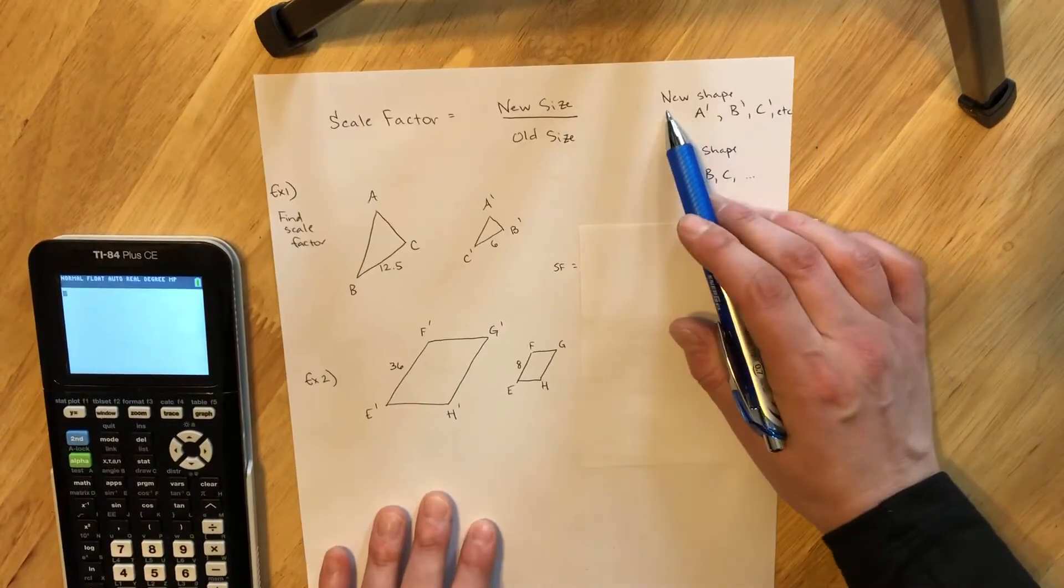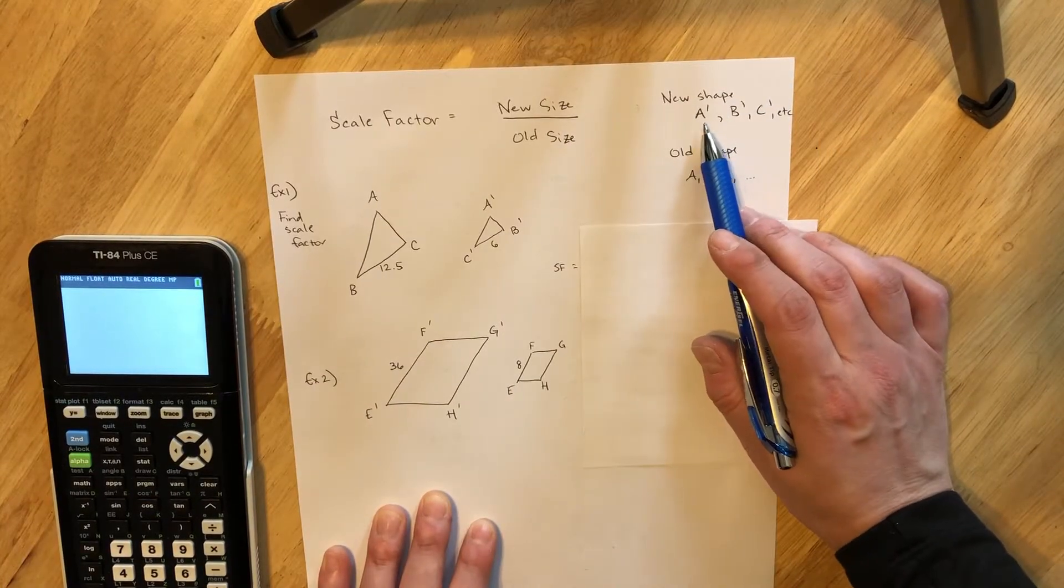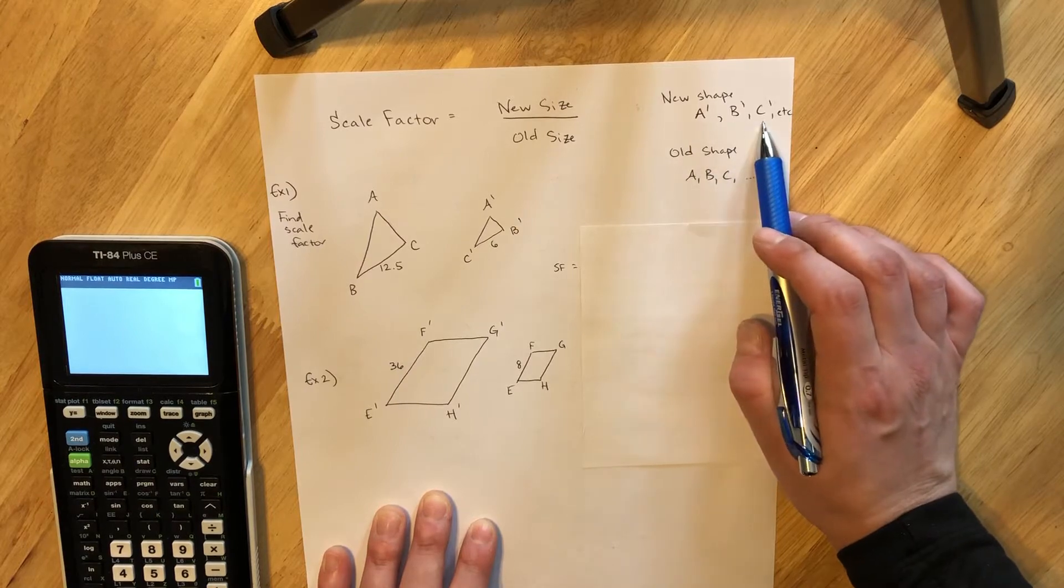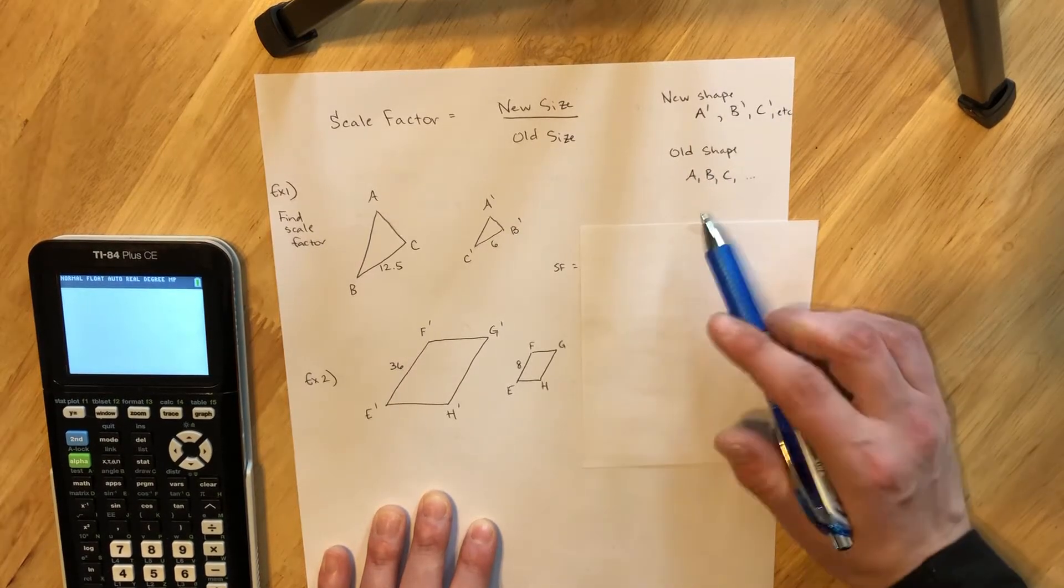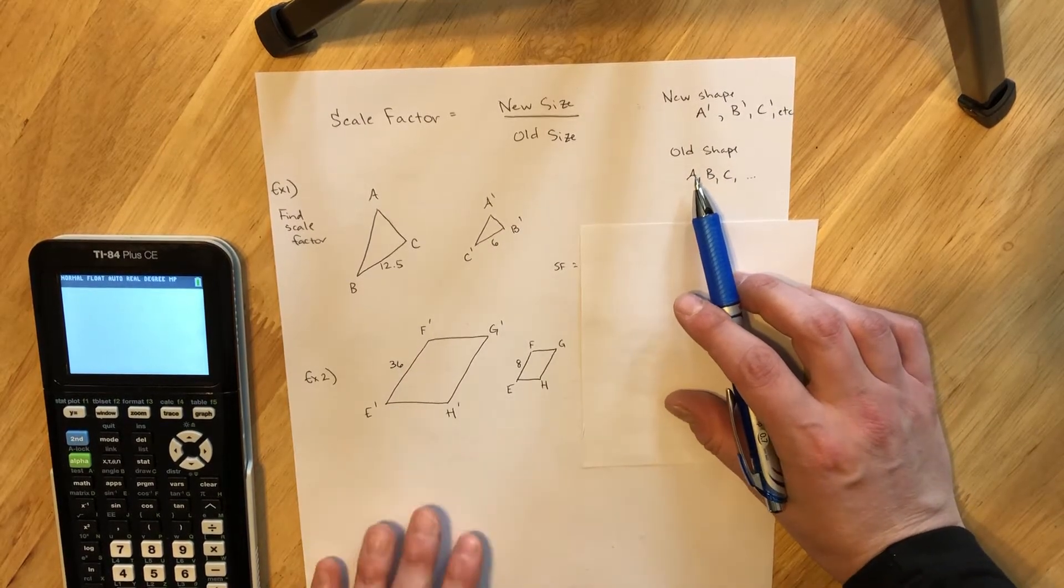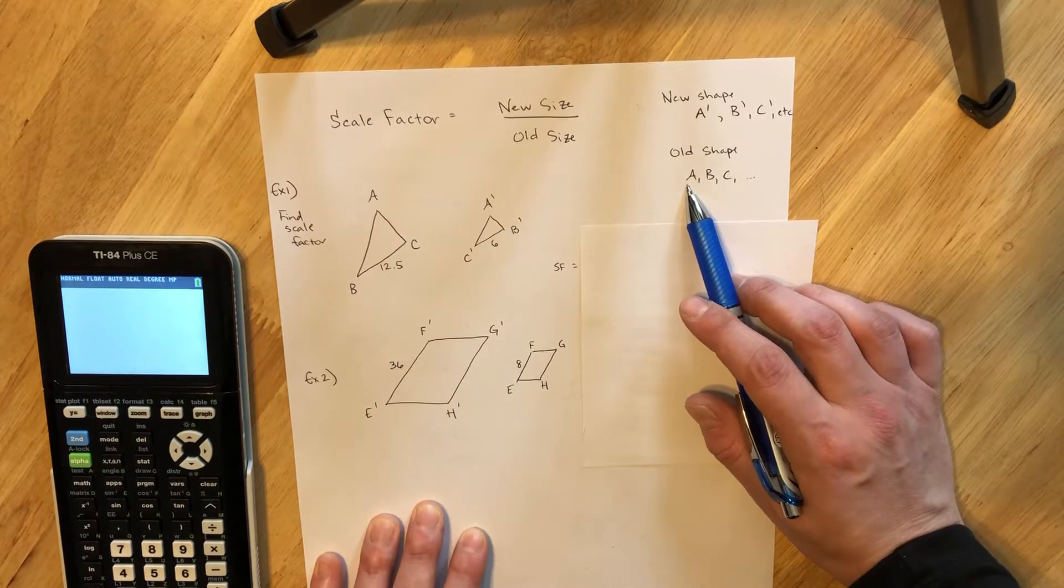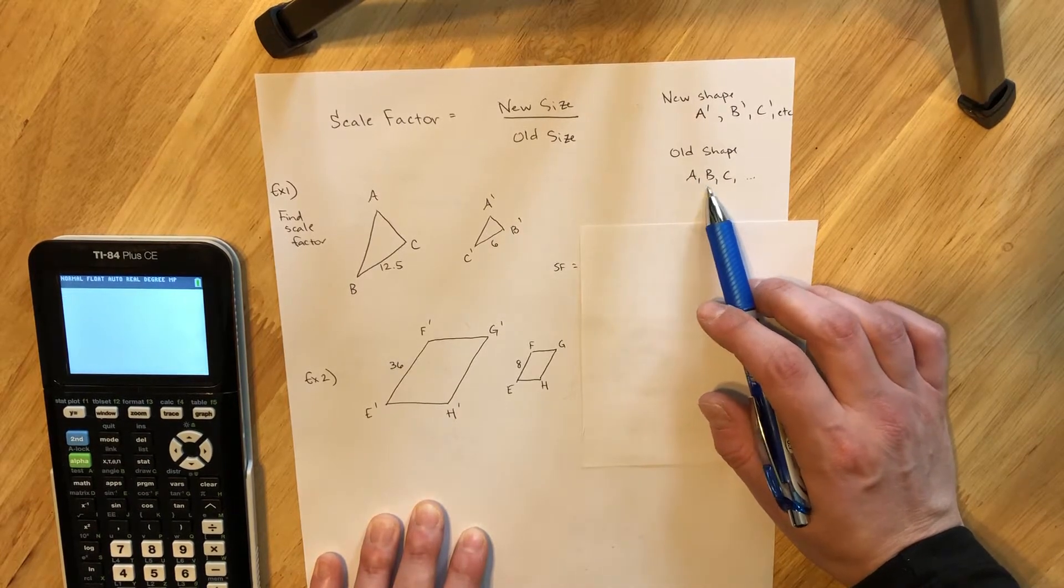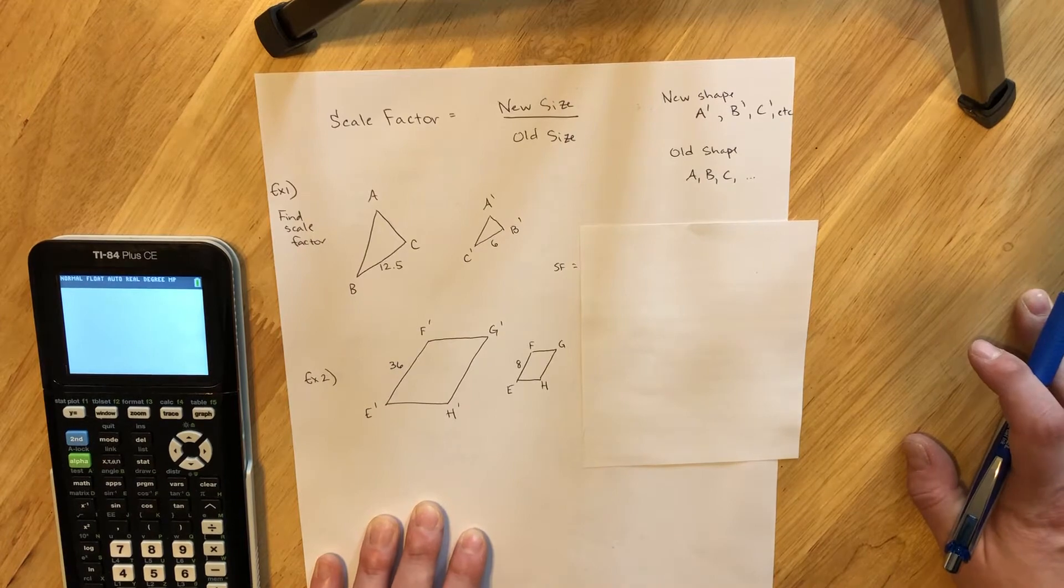And so as a reminder, on our new shape it will be marked as A prime, B prime, C prime with those little apostrophes. The old shape or the original pre-image will just have those regular letter labels for the vertex points.